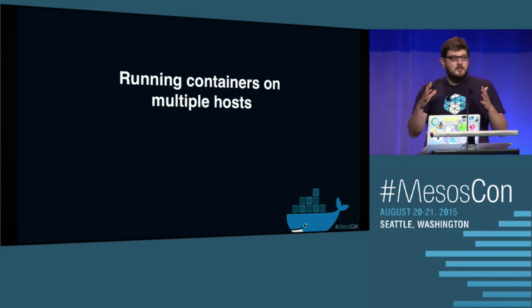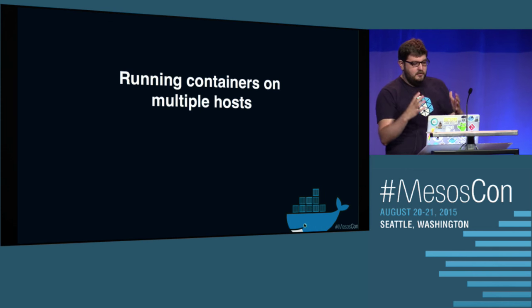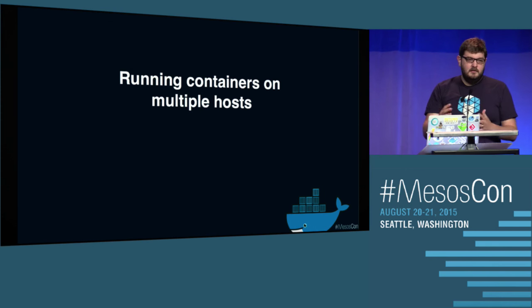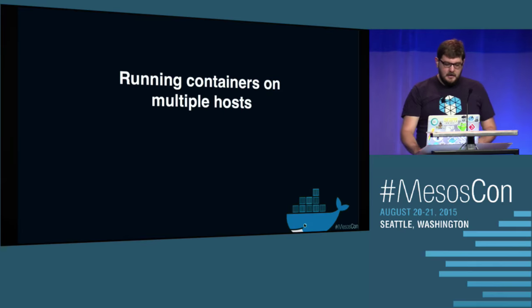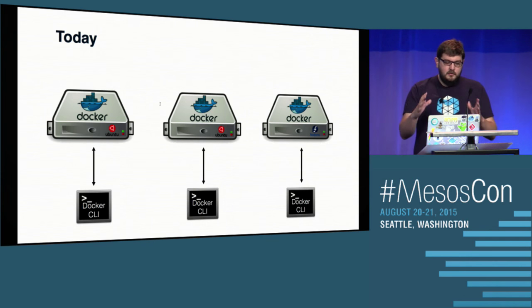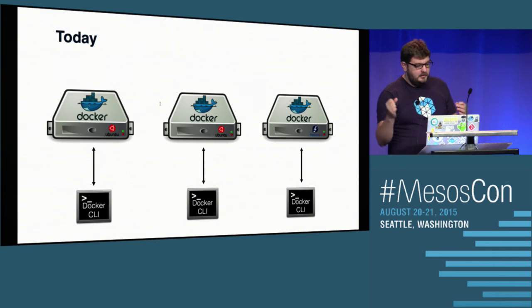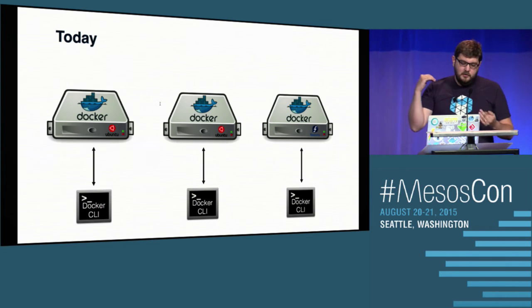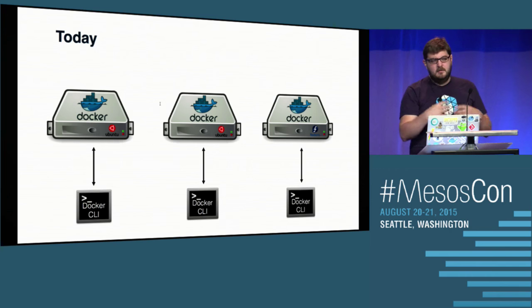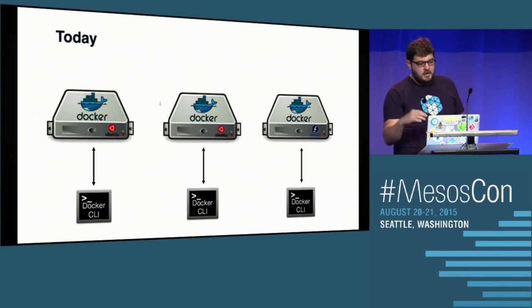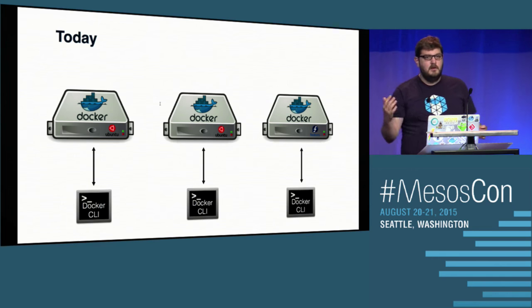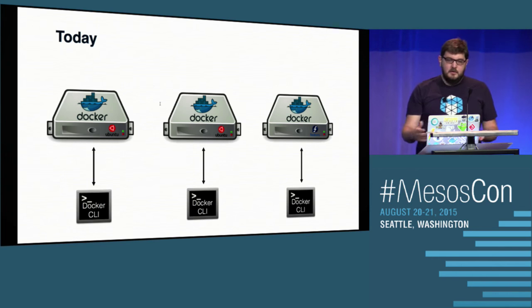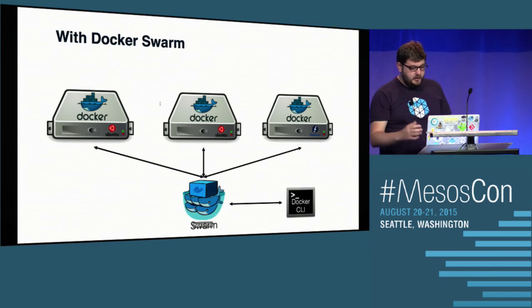What is Swarm? Swarm is a project made by Docker which basically allows you to run containers on multiple hosts using Docker native tools. Without Swarm, if you have multiple machines, you'd take the Docker CLI, talk to one machine, start a few containers, then change IP and port, talk to another machine, and so on. It's really not practical when you want to list all the containers you have on your cluster — you have to connect one by one. That's why we created Swarm.